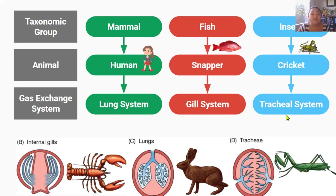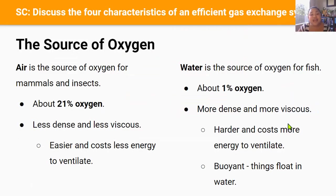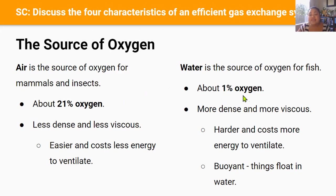There are several aspects of an animal's ecological niche to consider, but for this video we'll focus on the source of oxygen. Different taxonomic groups have different sources of oxygen: for mammals and insects their source is air, for fish it's water. Air has about 21% oxygen, whereas water only has 1% — a very small amount of dissolved oxygen. So fish are going to have very different adaptations to mammals and insects to be able to extract as much oxygen as possible from water.